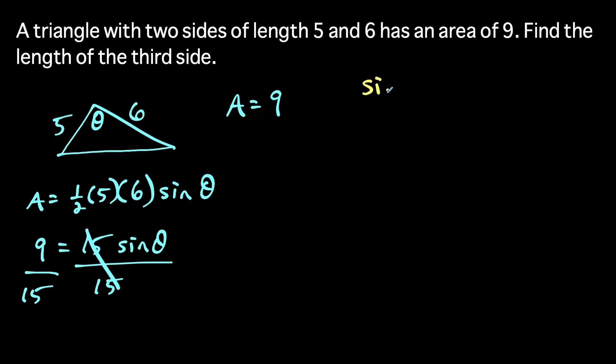Now what we could do with this equation here, we have sine theta equals nine over 15, is we could reduce this, divide the top and bottom by three, and that's going to give us three fifths. And now if we just draw out a random triangle here, a right triangle, we have angle theta over here.